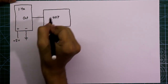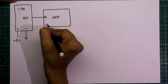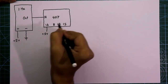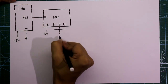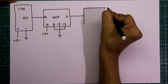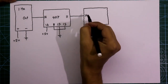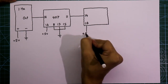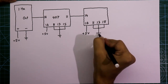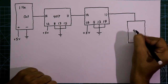Pin number 16 of the first IC 4017 is connected to plus 5 volts. Pin numbers 8, 13, and 15 are connected to ground. Pin number 11 of this IC is connected to pin number 14 of the next 4017. That IC's pin 16 goes to plus 5 volts, and pins 8, 13, and 15 go to ground.